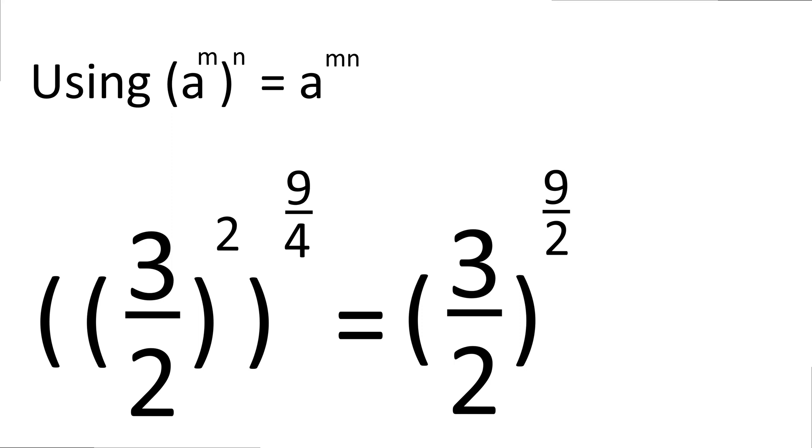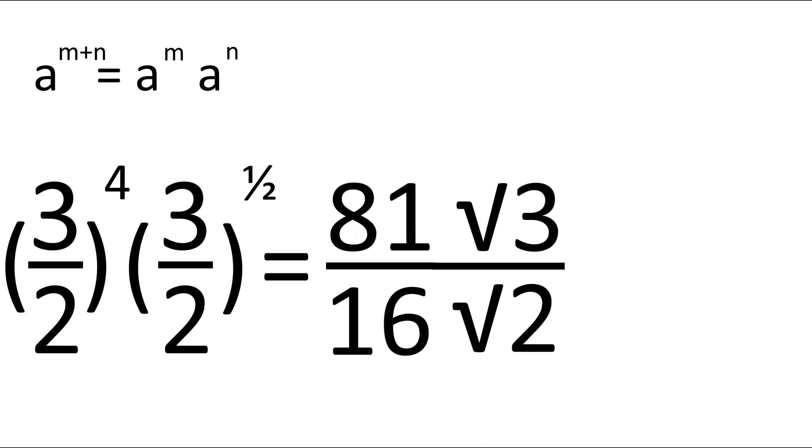Now 9 over 2 is 4 plus a half. If we use this identity to split up the term into two parts and then we do the calculation we get 81 times root 3 divided by 16 times root 2.